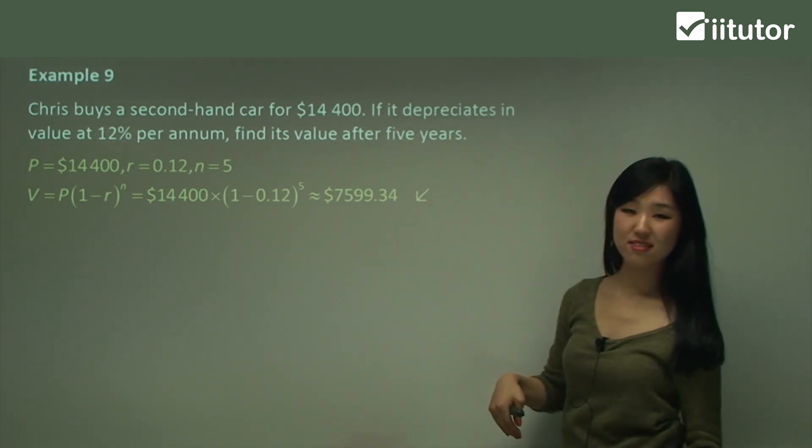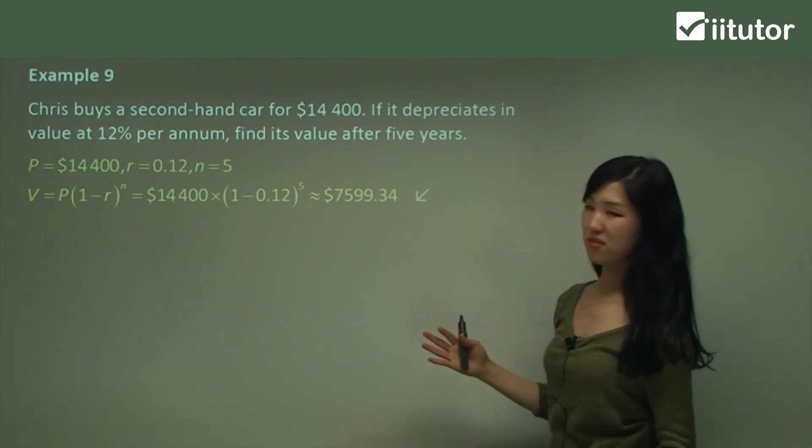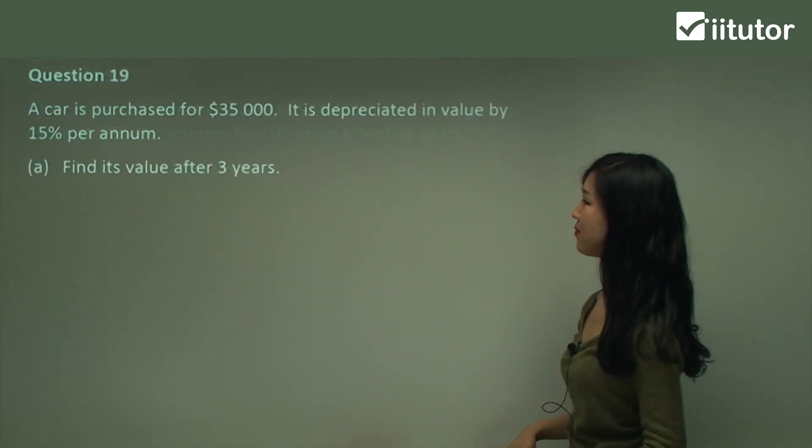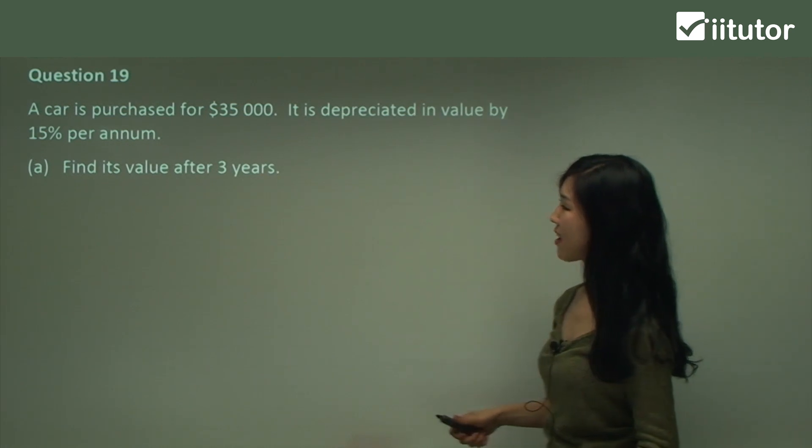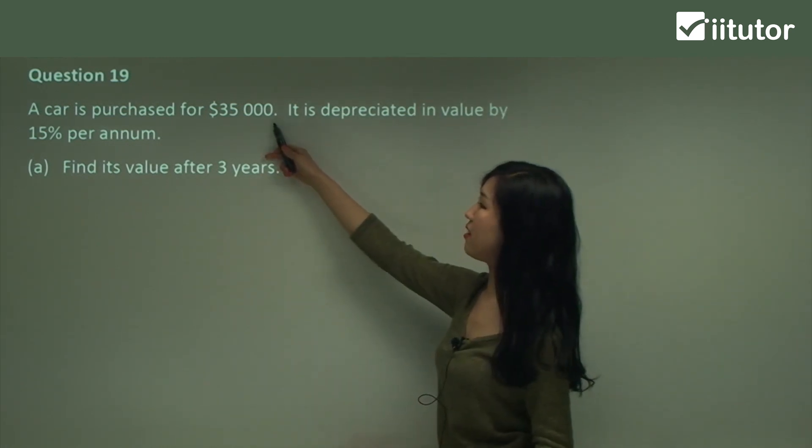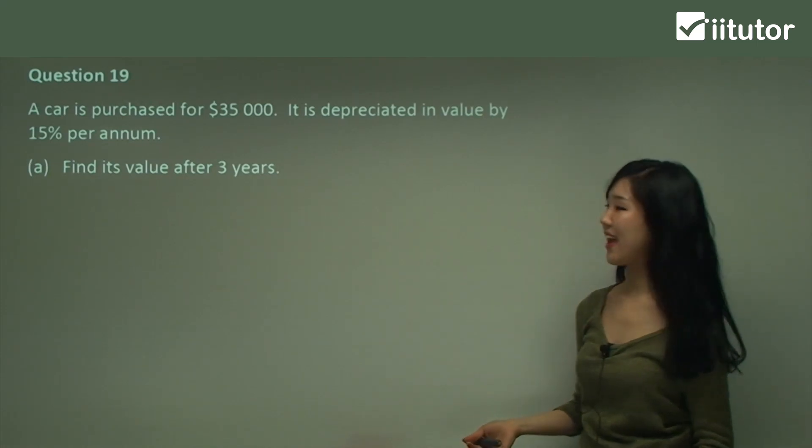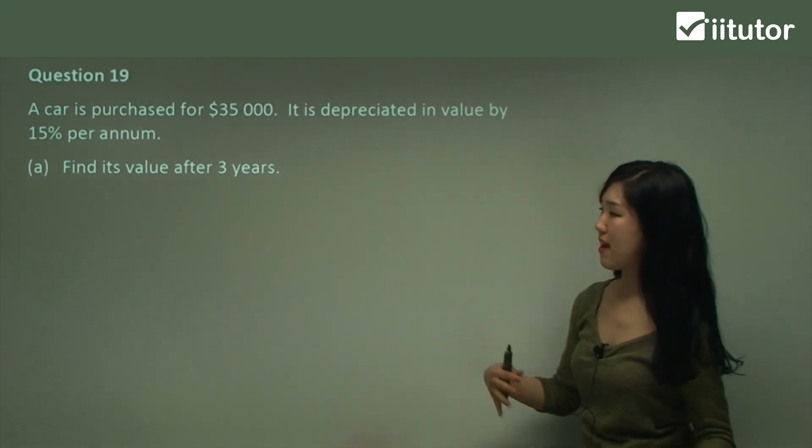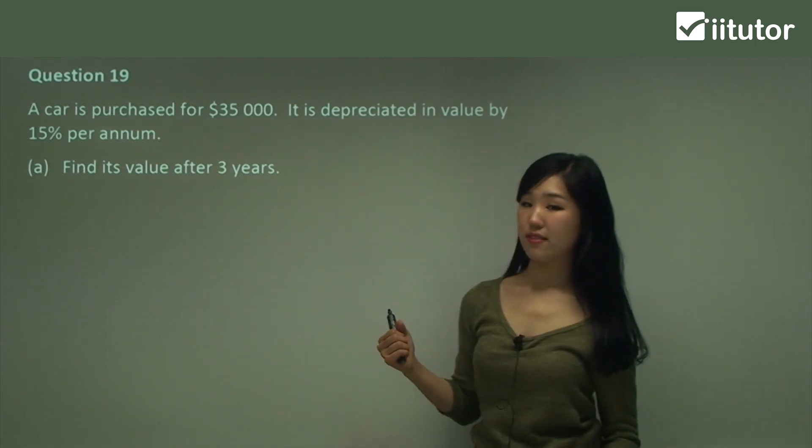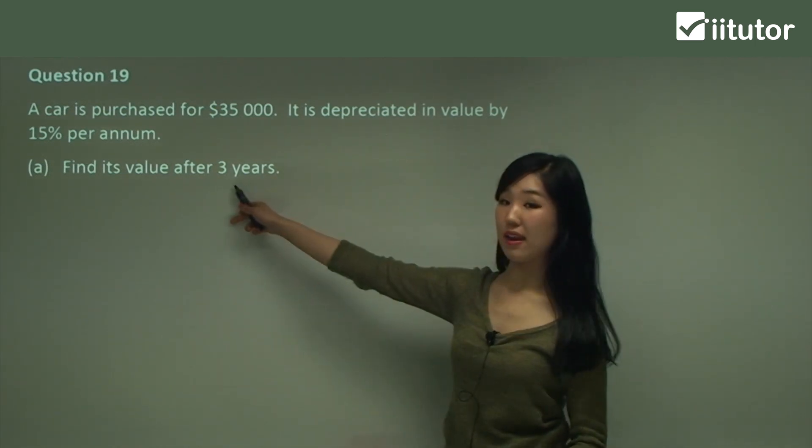So it's gone much less. Simple as that. Let's try some questions. Question 19 says, a car is purchased for $35,000. It is depreciated in value by 15% per annum. So again, it's going to go down in value. Find its value after three years—that's going to be our n.